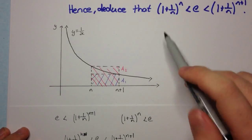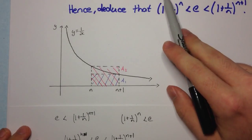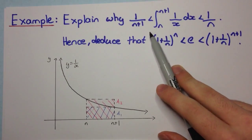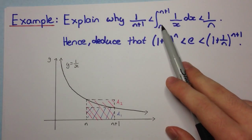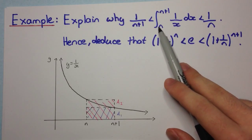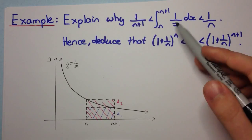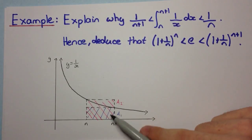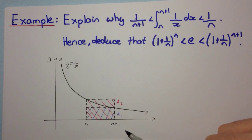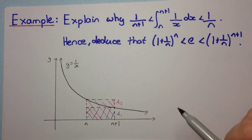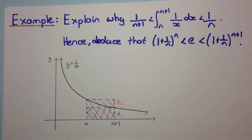So once again, once you see you're trying to find a bound for an integral, the best thing to do is to consider areas — consider the actual area and try to find overestimates and underestimates of the integral. Hope you enjoyed the video.